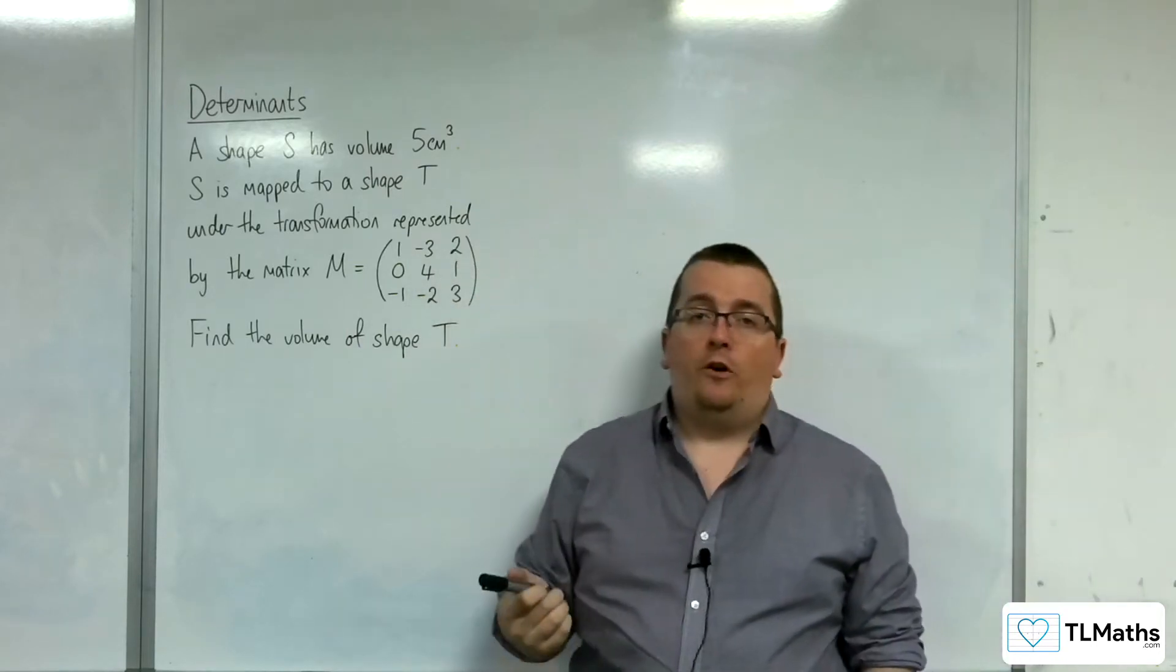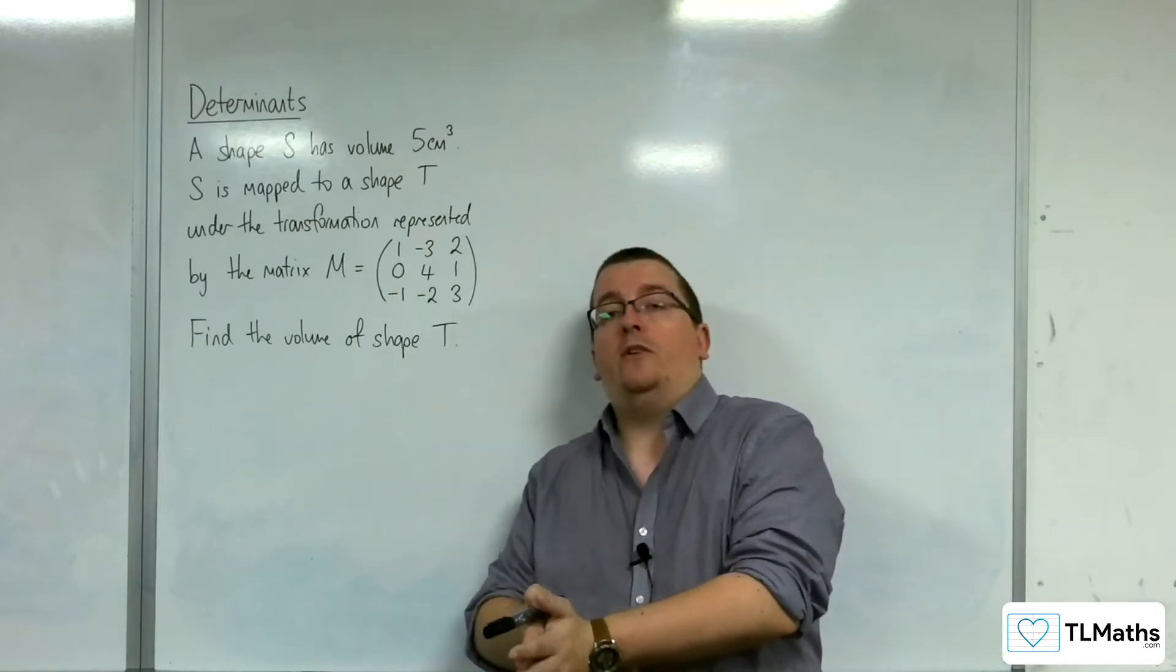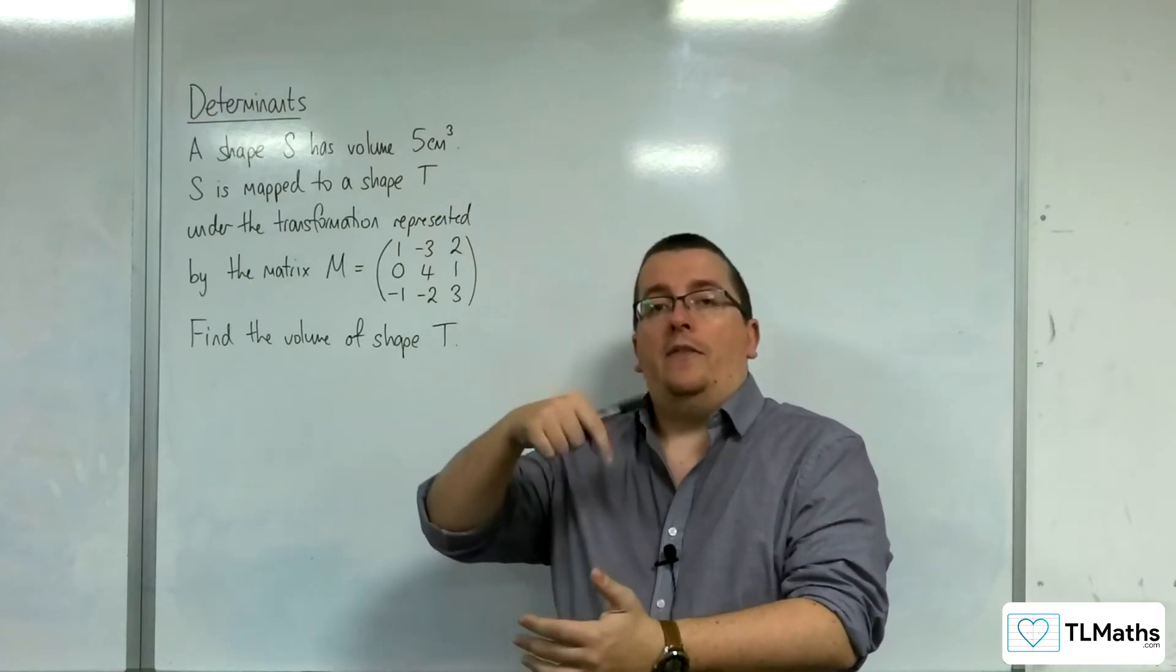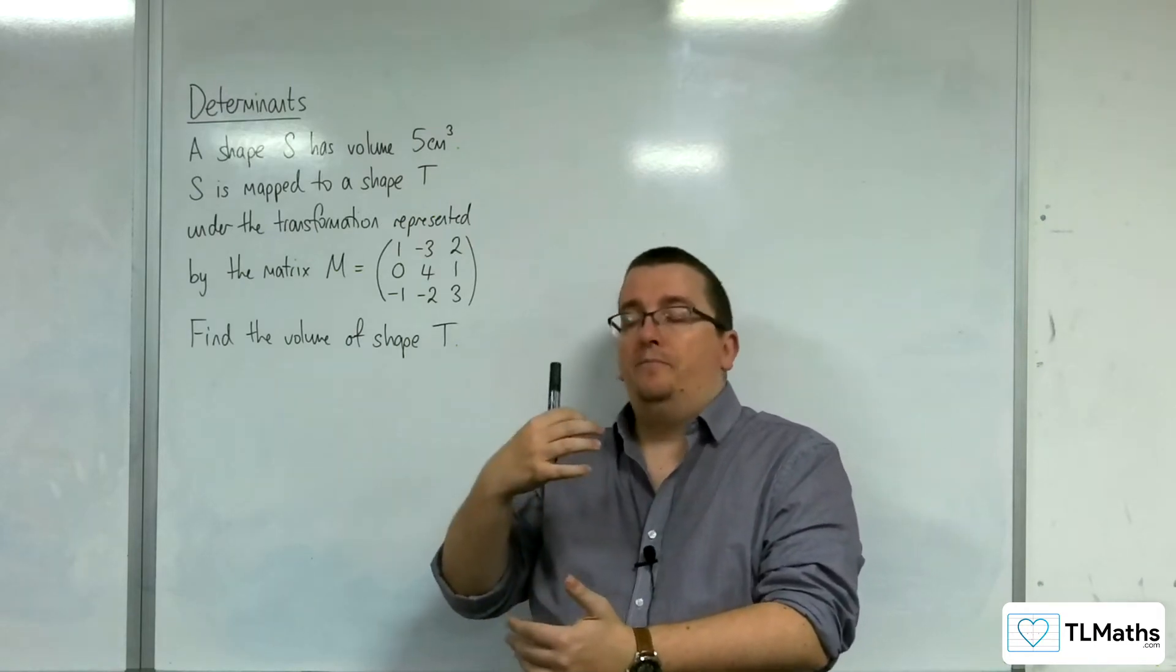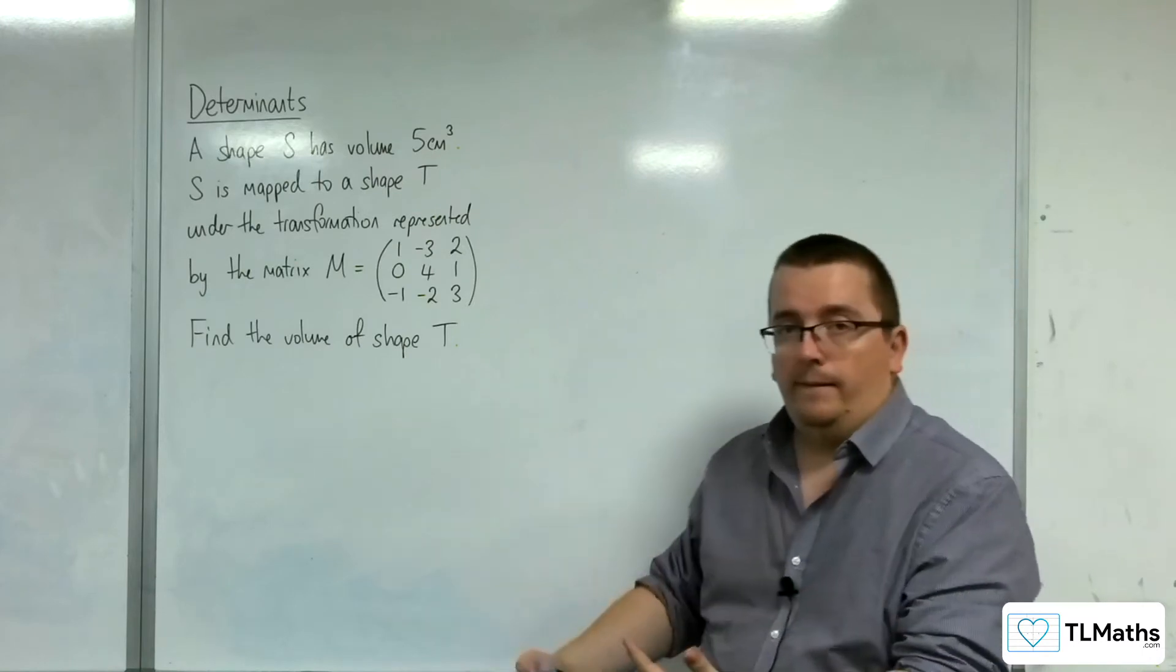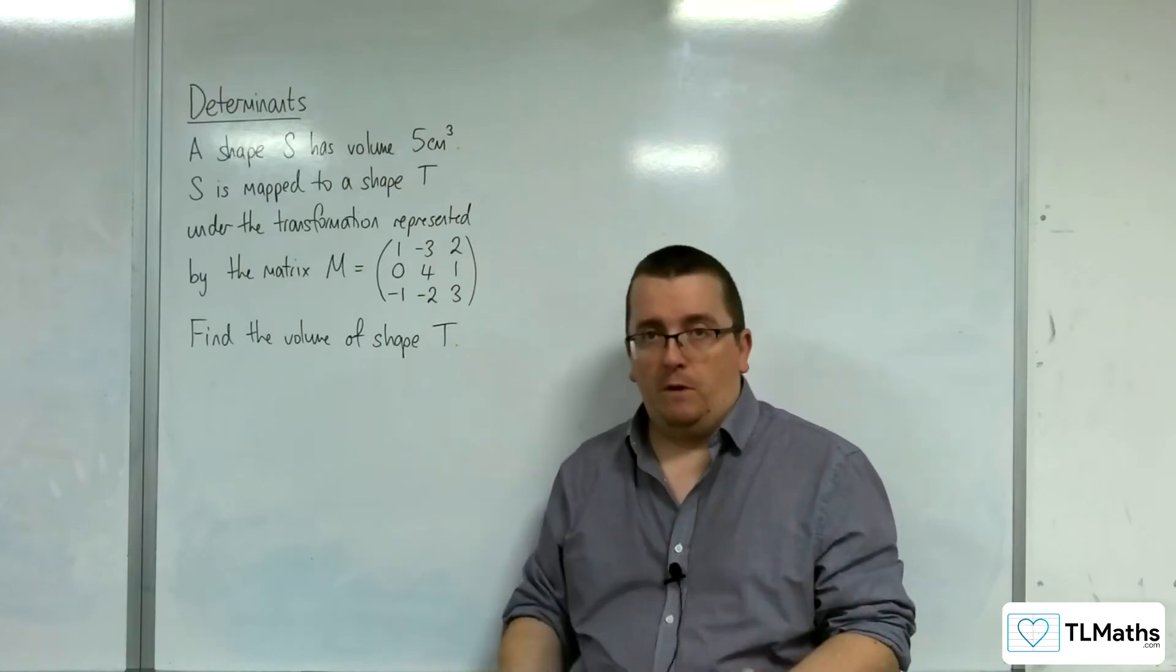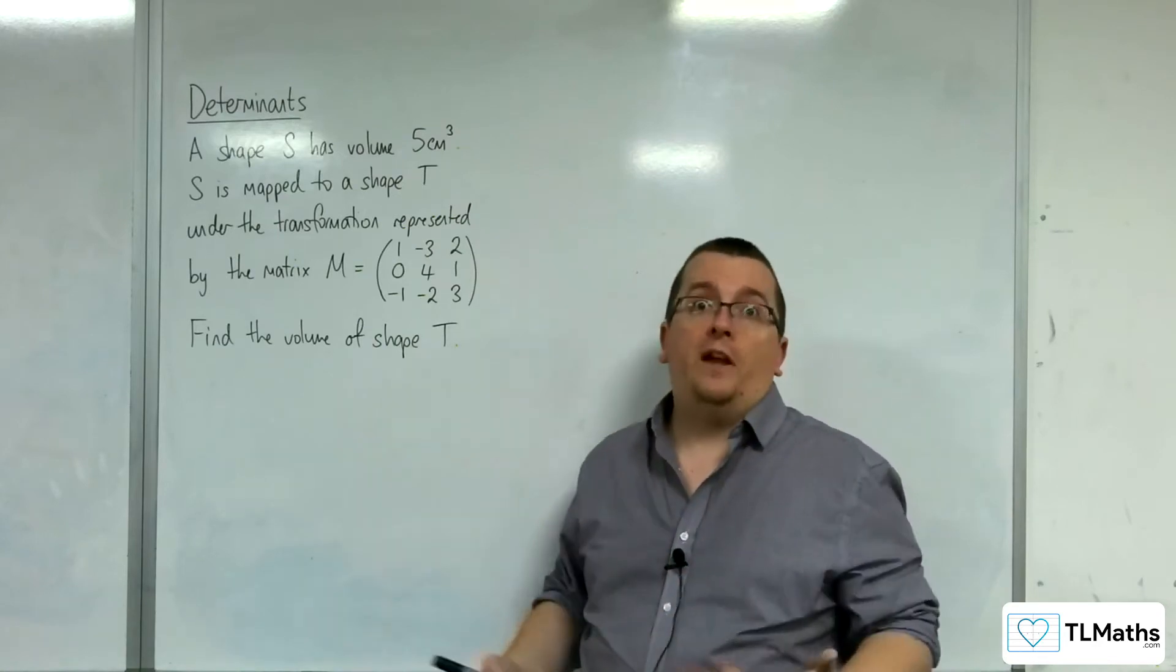Now in exactly the same way as the determinant of a 2 by 2 matrix represents the area, in the sense of the area multiplier, a 3 by 3 matrix represents a volume multiplier, a volume scale factor.